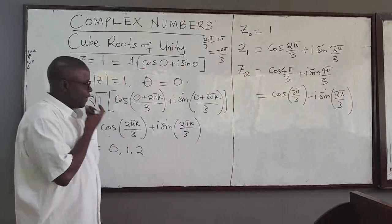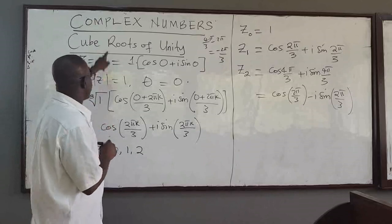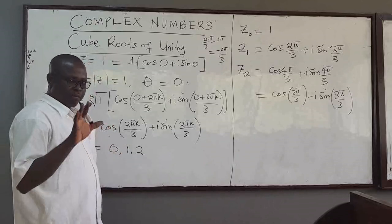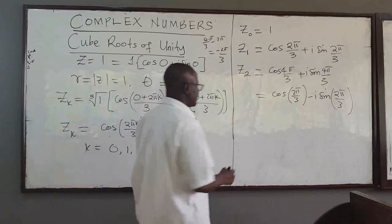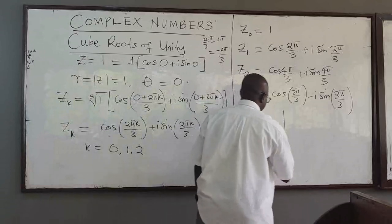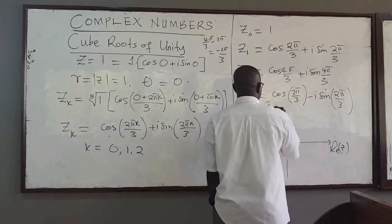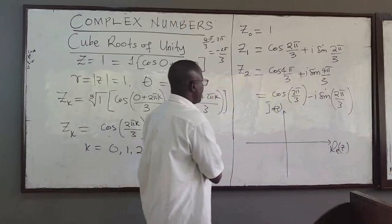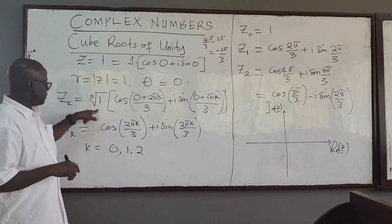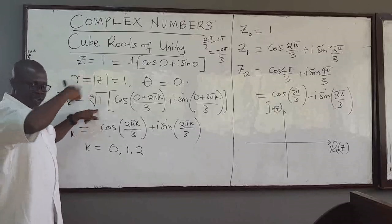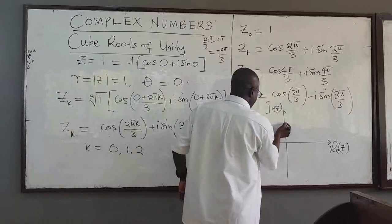Why is this important? Why are we concerned about the k-th roots of unity? It has some very interesting properties. On an Argand diagram — the complex plane with real and imaginary axes — as we mentioned, all roots have the same modulus, which is one. This means they lie on a circle of radius one, the unit circle.